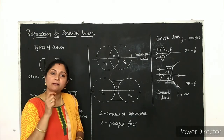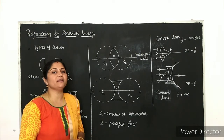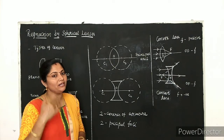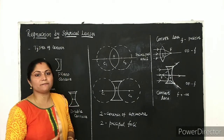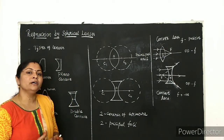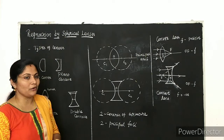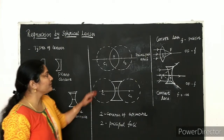Specifically, when one of the surfaces is a plane, at one surface which is spherical, that may be convex or concave.